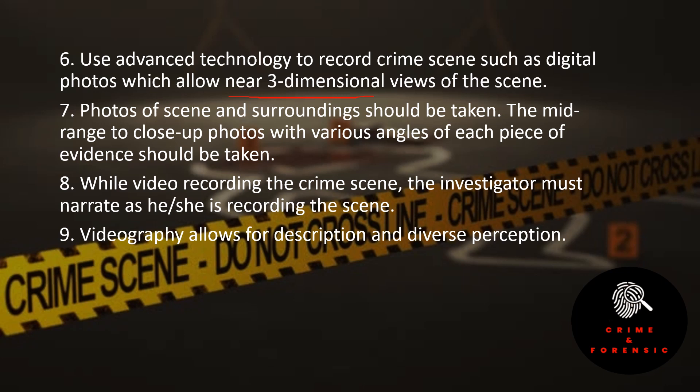Photos of the scene and surrounding should be taken from mid-range to close-up range with various angles — from mid-range to close-up range, photography of each piece of evidence should be done from different angles. While video recording the crime scene, the investigator must narrate what he or she is recording, starting with their name, then stating they are recording the crime scene, and providing a description of the scene including what happened, where it happened, details about each piece of evidence, and their own observations.